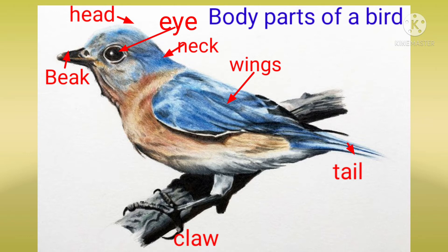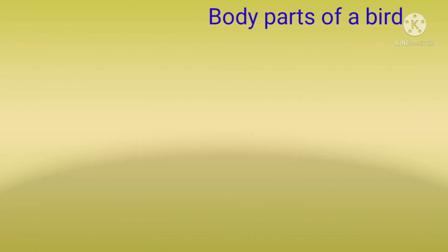The body of a bird is designed to help it fly. It is shaped like a boat. The pointed head and beak help the bird to cut through the air. This is called a streamlined body, which makes it easy for a bird to fly.